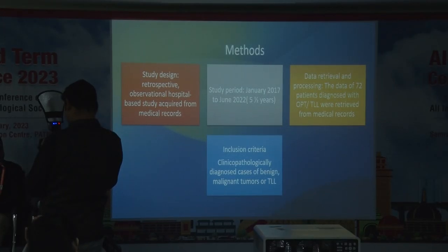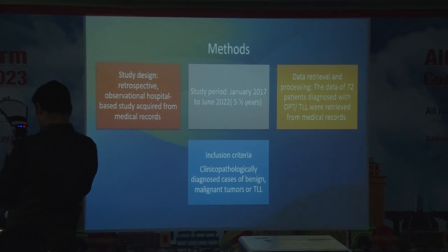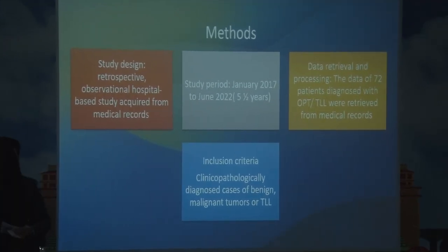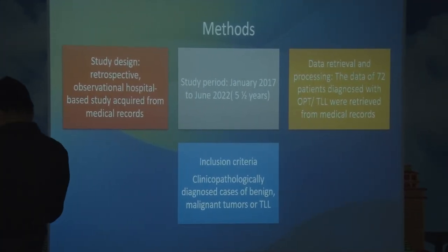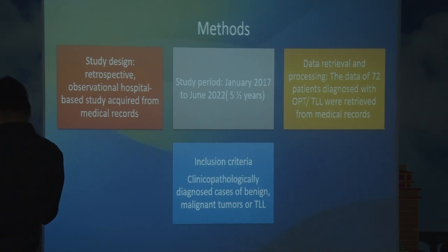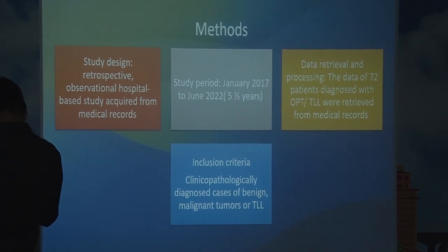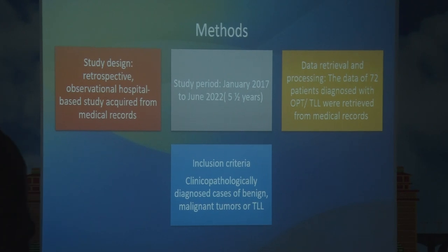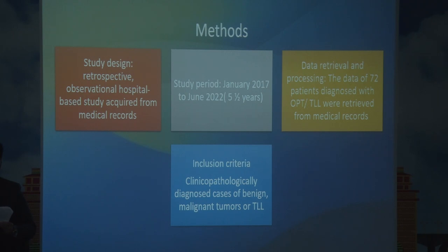The methods: this is a retrospective observational hospital-based study acquired from medical records, conducted from January 2017 to June 2022 — a five and a half year duration. Data was retrieved from 72 patients diagnosed with ocular and periocular tumors and tumor-like lesions. The inclusion criteria was all clinico-pathologically diagnosed cases.